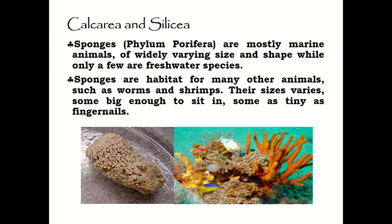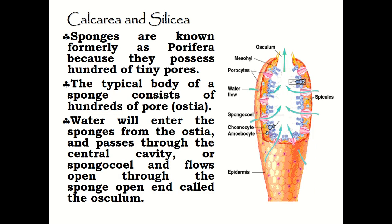Phylum Porifera are mostly marine animals of widely varying size and shape, while only a few are freshwater. Some sponges serve as habitats for many other animals such as worms and shrimp in marine life. Their sizes vary — some are big enough to sit in and some are as tiny as fingernails.